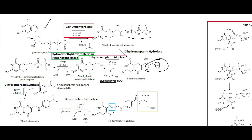That gives us 7,8-dihydro-6-hydroxymethylpterin. Then hydroxymethyldihydropterin pyrophosphokinase takes an ATP and adds a pyrophosphate onto it, giving us 7,8-dihydro-6-hydroxymethylpterin pyrophosphate. Then dihydropteroate synthase takes p-aminobenzoic acid, or PABA, sometimes referred to as vitamin B10.